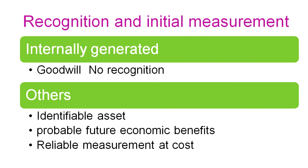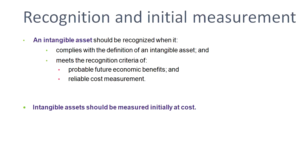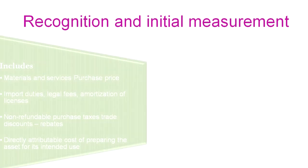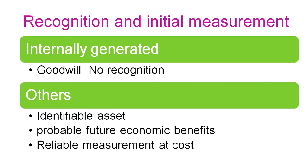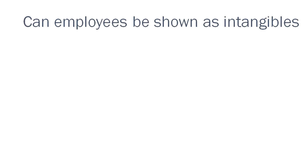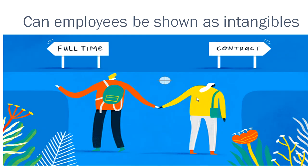Internally generated goodwill: no value shall be recognized because there is no reliable value — it is away from recognition scope. Probable economic benefits exist but the value cannot be measured reliably, so internally generated goodwill is excluded from intangible asset recognition. Other identifiable intangible assets with probable future economic benefits and reliable measurement should be measured initially at cost.